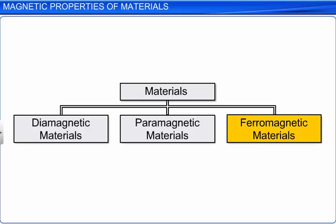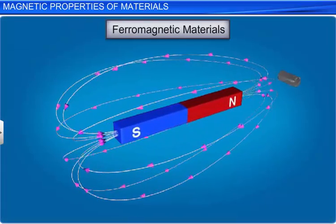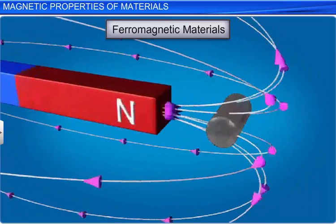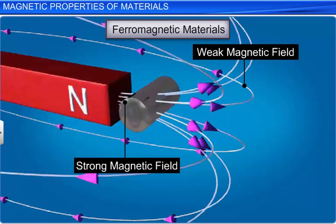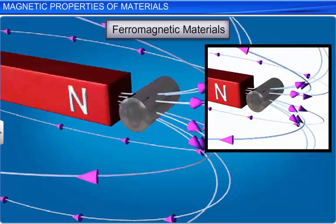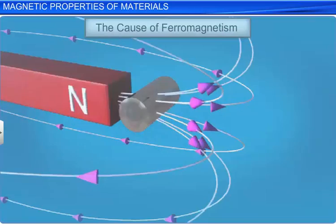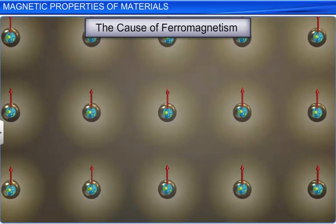Let us now discuss about ferromagnetic materials. Ferromagnetic materials are the materials that are strongly attracted by the magnets. When a bar of ferromagnetic material is placed in a non-uniform external magnetic field, it has a strong tendency to move from a region of weak magnetic field to a stronger magnetic field, and the field lines are highly concentrated inside the ferromagnetic material. Similar to paramagnetic material, the individual atoms in a ferromagnetic material also possess a permanent magnetic dipole moment due to the orbiting electrons.